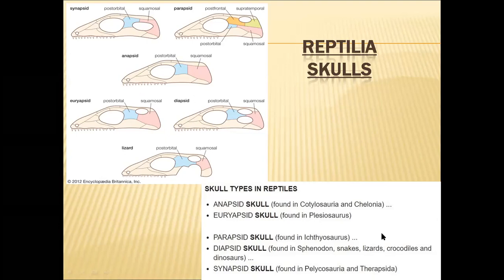Different reptile groups possess different skull types. Anapsida skull is present in cotylosauria and chelonians — chelonians include all turtles, terrapins, and tortoises; cotylosauria are extinct. Euryapsida skull is found in plesiosaurs, which are also extinct. Diapsida skull is present in the present-day living Sphenodon, snakes, lizards, crocodiles, and extinct dinosaurs. Synapsida skull is present in pelycosauria, which are extinct, and therapsida, also extinct. But the successors of therapsida — mammals — are living now, so mammals also have a synapsida skull.